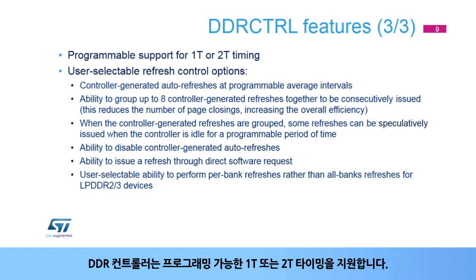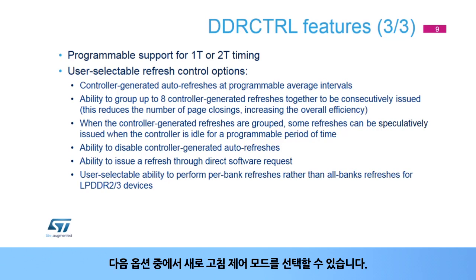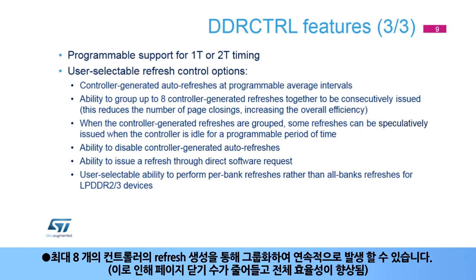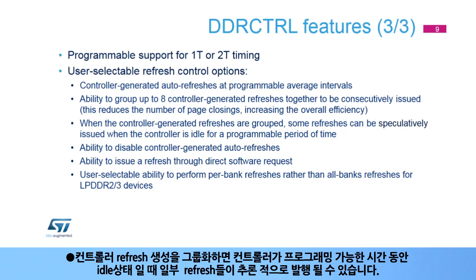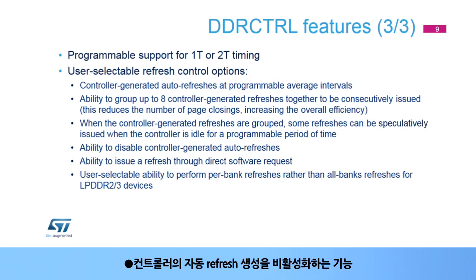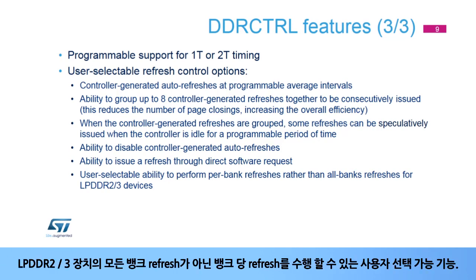The DDR controller supports programmable 1T or 2T timing. Refresh control modes include: controller-generated auto-refreshes at programmable average intervals; ability to group up to 8 controller-generated refreshes together to be consecutively issued, which reduces the number of page closings and increases overall efficiency. When grouped, some refreshes can be speculatively issued when the controller is idle. Ability to disable controller-generated auto-refreshes and to issue a refresh through direct software request.